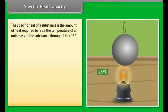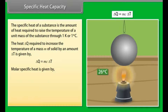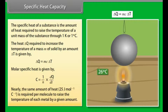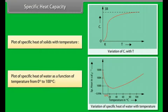The specific heat of a substance is the amount of heat required to raise the temperature of a unit mass of the substance through 1 Kelvin or 1 degree Celsius. The heat delta Q required to increase the temperature of mass M by an amount delta T is given by delta Q = MC delta T. Molar specific heat is given by C = (1/N)(dQ/dT). Nearly the same amount of heat, about 25 J/mol/°C, is required to raise the temperature of each metal. The variation of specific heat with temperature and the specific heat of water from 0°C to 100°C are shown in graphs.